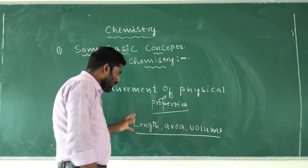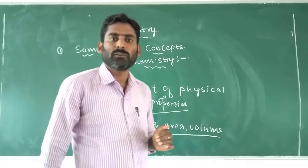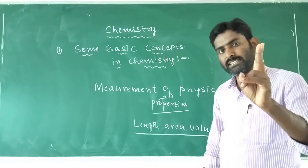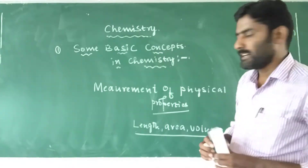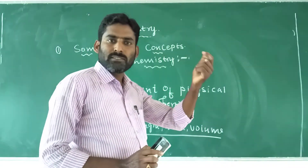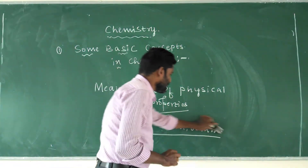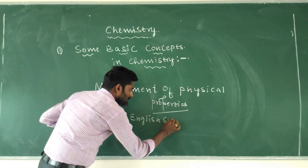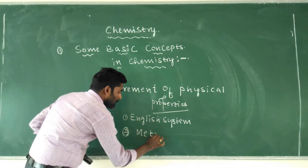The quantitative measurement of physical properties of matter is required for further scientific calculations. Across the world, in the olden days, there were two systems used for measurement: the English system and the metric system.